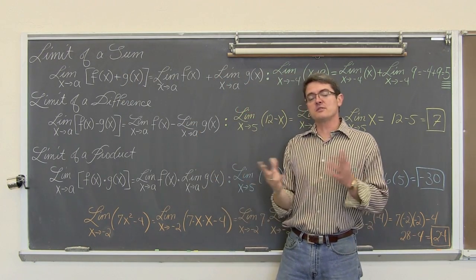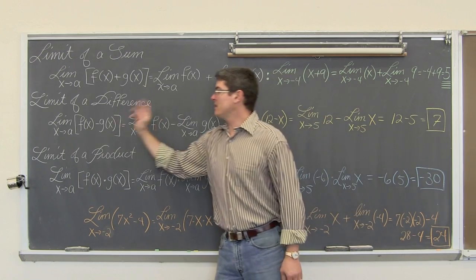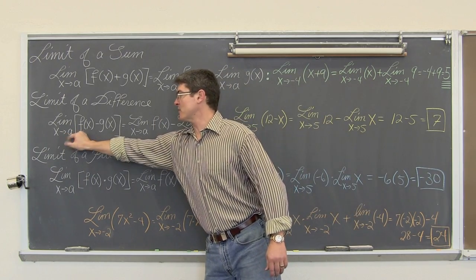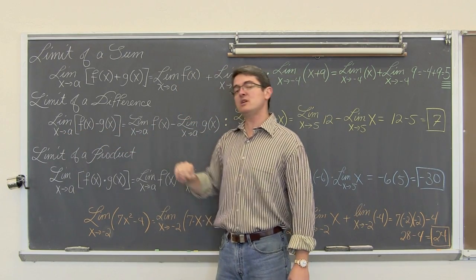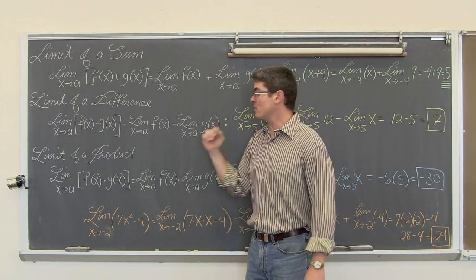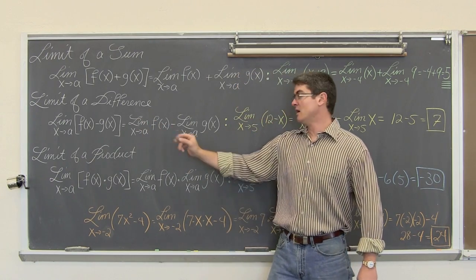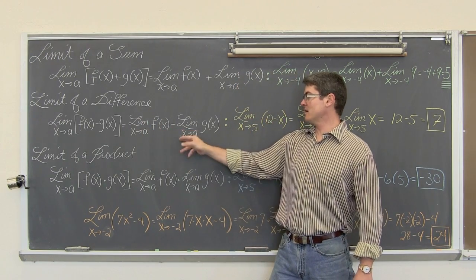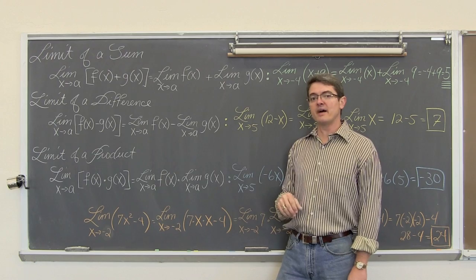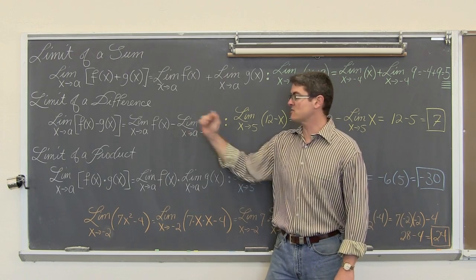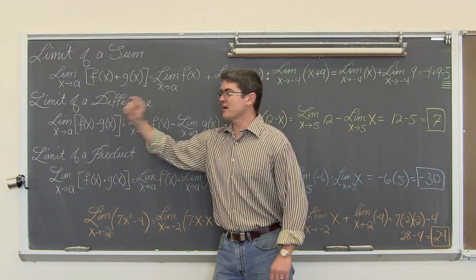The difference property: if you can add two things you can subtract them. The limit as x approaches a of f(x) minus g(x) is equal to the limit as x approaches a of f(x) minus the limit as x approaches a of g(x), and you subtract them.